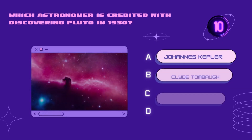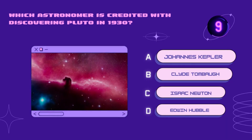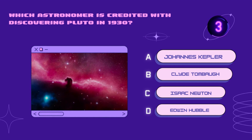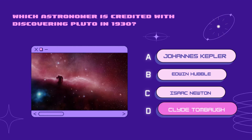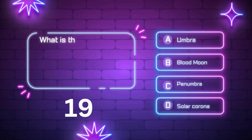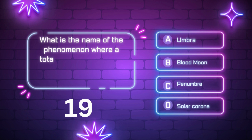Which astronomer is credited with discovering Pluto in 1930? Your time starts now. Right answer is Clyde Tombaugh.